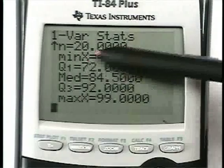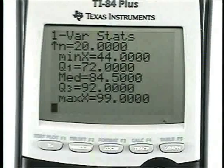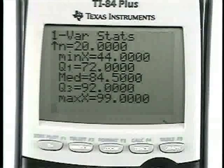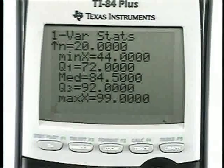All these other values, min X, that's the minimum that was in the data set, 44, and 99 was the biggest. Q1 and Q3 are values that we'll talk about very shortly in another presentation.